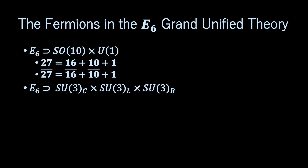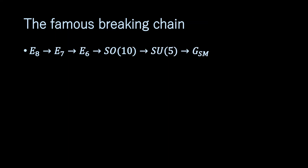The E6 to SU(3)³ breaking pattern has appeared in phenomenological analyses of the heterotic string. The logic by which GSM is a maximal subgroup of SU(5), which together with U(1) is a maximal subgroup of SO(10), continues in a very elegant and systematic way up to the largest exceptional group. The resulting famous breaking chain E8 → E7 → E6 → SO(10) → SU(5) → GSM is a tantalizing hint at deeper structures.